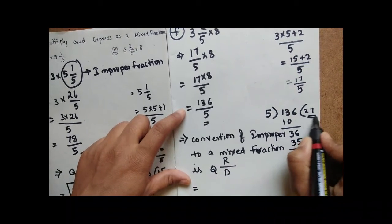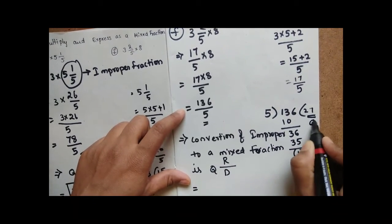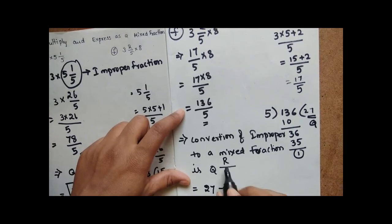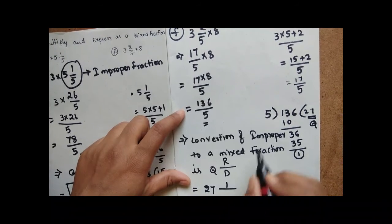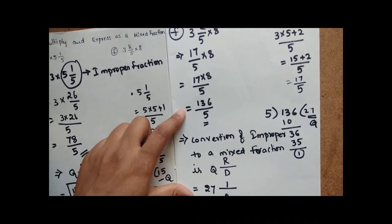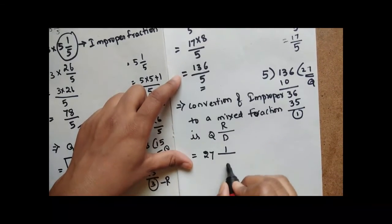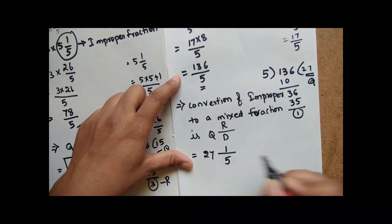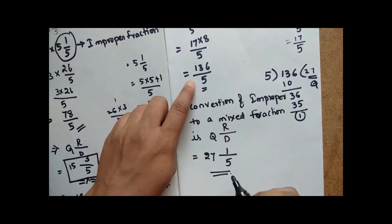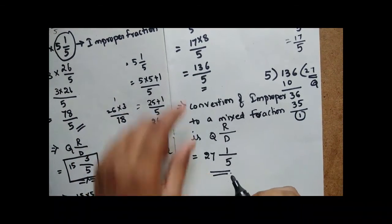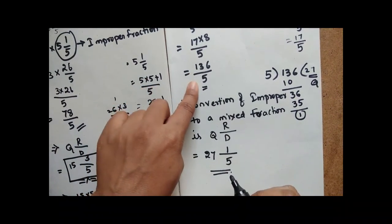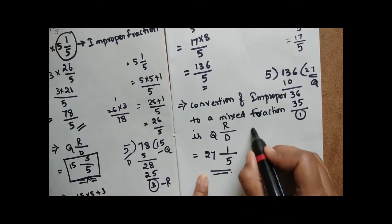What is the quotient here? The quotient is 27. The remainder is 1, and the divisor is 5. So this is the conversion of the improper fraction to the mixed fraction: 27 and 1 by 5, that is 27⅕.